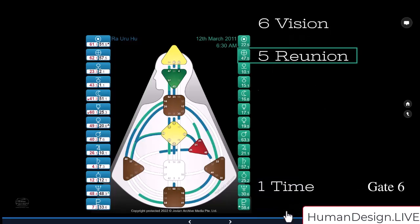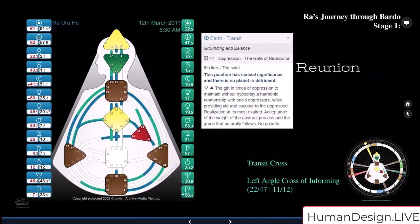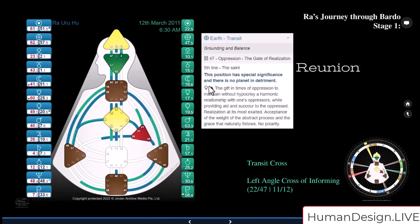Reunion, Vision, and Time, Ra's sequence. So here's the reunion: 47.5 Earth, the Saint. This position has special significance in that there is no planet in detriment. Here's Ra's journey through the Bardo, stage one. Venus exalts. Venus exalts the gift in times of oppression, to maintain without hypocrisy a harmonic relationship with one's oppressors while providing aid and succor to the oppressed. Realization at its most exalted, acceptance of the weight of the abstract process, and the grace that naturally follows. Here we have no polarity because there's no polarity there. It didn't have to be that Ra had a Venus up here, it's just no polarity. But Venus is a strong exaltation process there.